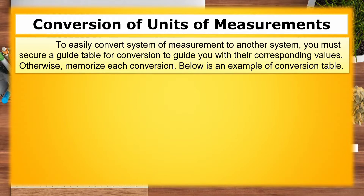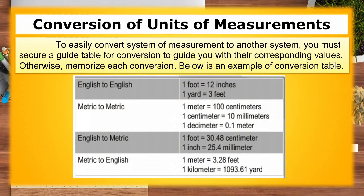The following is an example of a conversion table. English to English: 1 foot equals 12 inches; 1 yard equals 3 feet. Metric to metric: 1 meter equals 100 centimeters; 1 centimeter equals 10 millimeters; 1 decimeter equals 0.1 meter. English to metric: 1 inch equals 25.4 millimeters. Metric to English: 1 meter equals 3.28 feet; and 1 kilometer equals 1,093.61 yards.